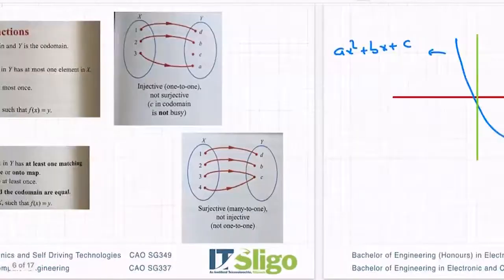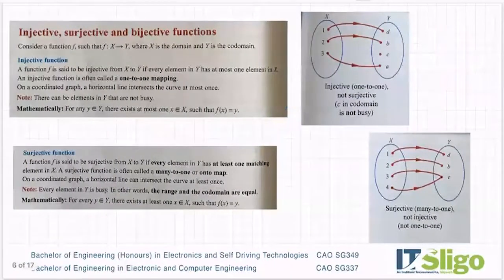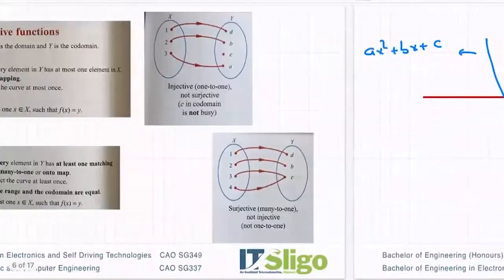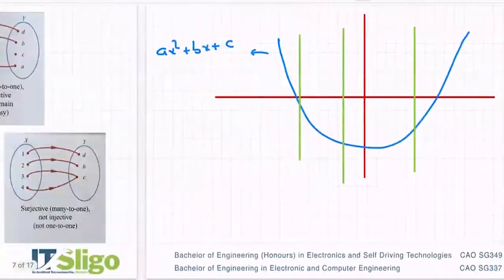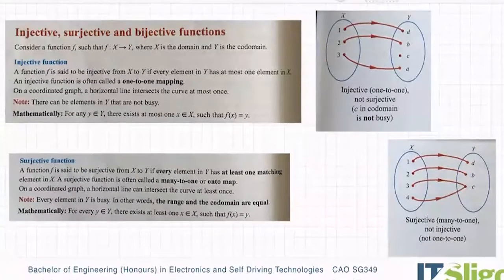Once you have established that it is a function using the vertical line test, you may then be asked: what type of function is it? The answer is either injective, surjective, or bijective. These are the main types and the ones on the Leaving Cert course. I've taken these definitions from the Project Maths book, but I also have them from Revise Wise, so I'm going to go through both definitions of all the different types of functions.